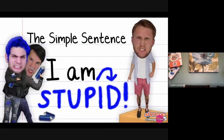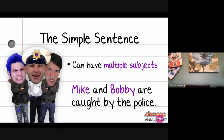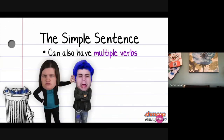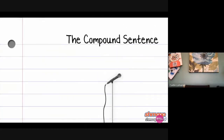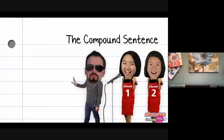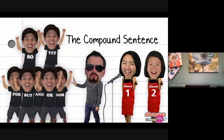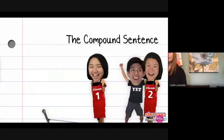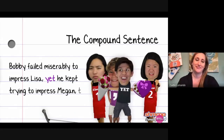But a simple sentence doesn't have to be quite so simple. It can have a compound subject — that is, multiple subjects — like Mike and Bobby are caught by the police. Or a compound verb: Mike goes home and loses his art supplies. In a compound sentence, you've got one sentence but two independent clauses joined by a FANBOYS coordinator — for, and, nor, but, or, yet, and so. These FANBOYS are joined between two independent clauses, usually preceded by a comma. For example: Bobby failed miserably to impress Lisa, yet he kept trying to impress Megan too.